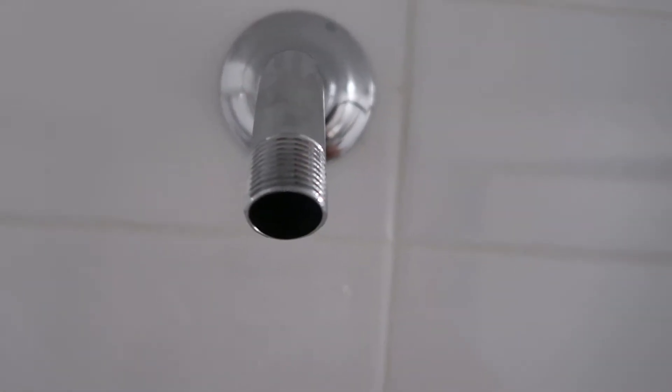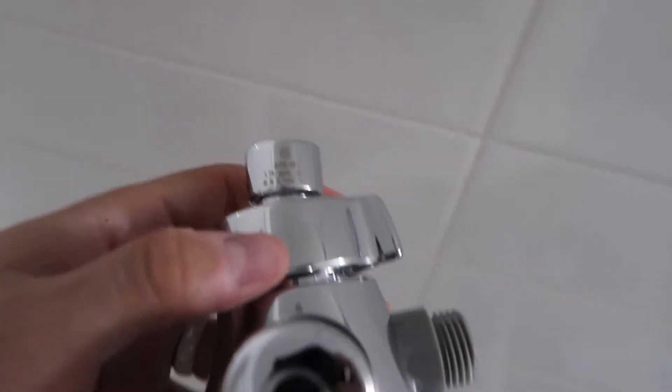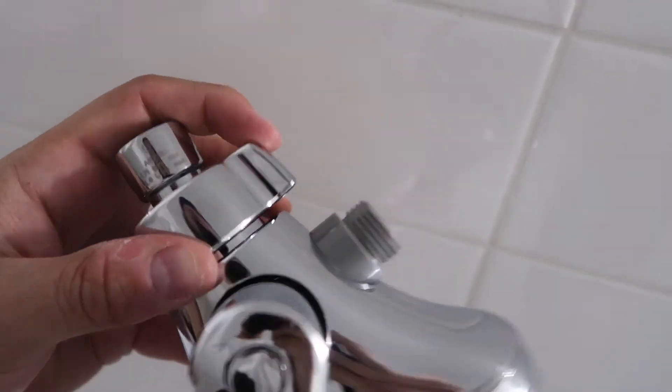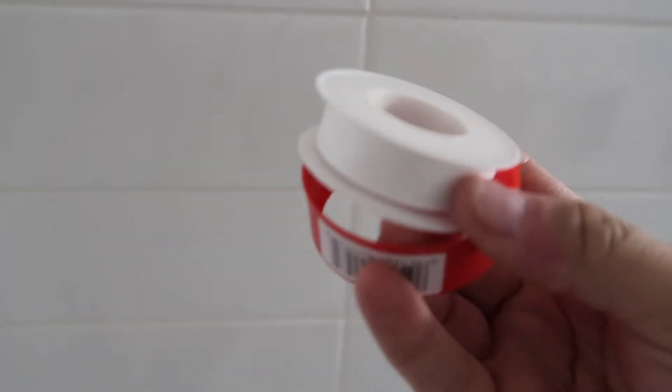Next step, once you've taken off all the tape so it's fresh, you want to loosen this right here so that now this can move and rotate. Then what you want to do is apply Teflon tape. This is the Teflon tape that I got.